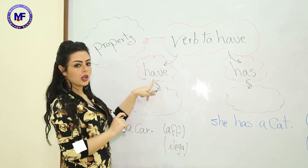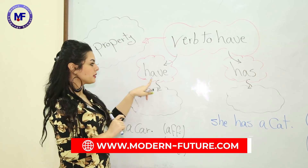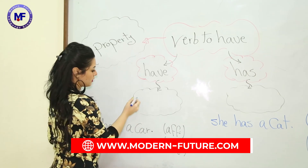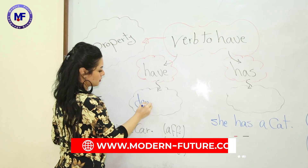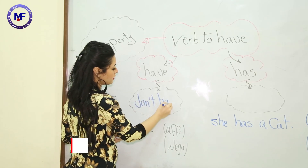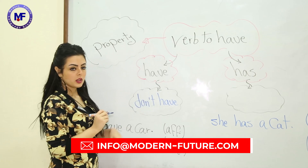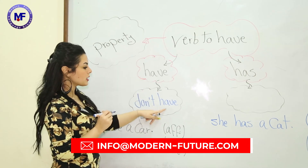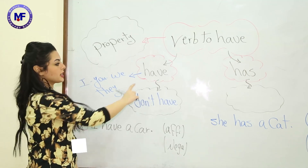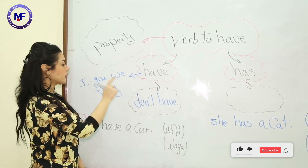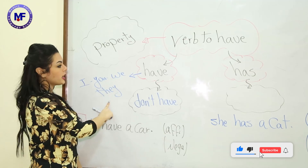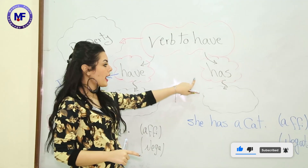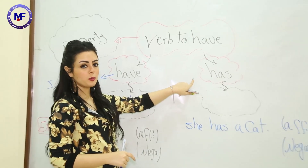'Have' will come in the affirmative sentence. If it's negative, you will put 'don't have'. So don't forget that 'have' will come with I, you, we, and they.